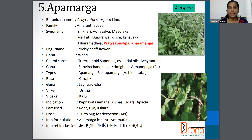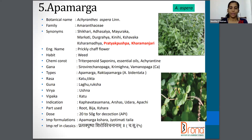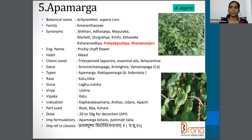The next one is Apamarga. The botanical name is Achyranthes aspera, Amaranthaceae family. Synonyms are Shigari, Mayuraka, Prithyakushpa, Karamanjari, etc. The English name is Prickly Chaff Flower. The parts used are root, Bija, and Shara, and the dosage is 20 to 50 gram for decoction as per API.